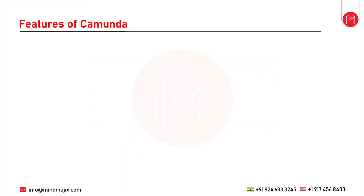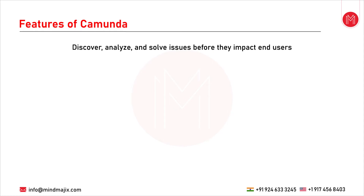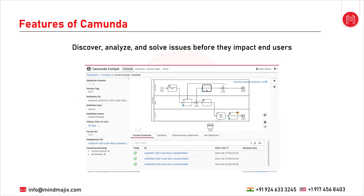The fourth feature is the ability to discover, analyze and solve issues before they impact end users. Cockpit delivers a real-time view of BPMN processes and DMN decision tables as they run, so you can monitor their status and quickly identify technical incidents that slow down or stop the workflows. Cockpit provides the data you need to analyze incidents and quickly take action to ensure end users aren't stuck in a workflow that is going nowhere.